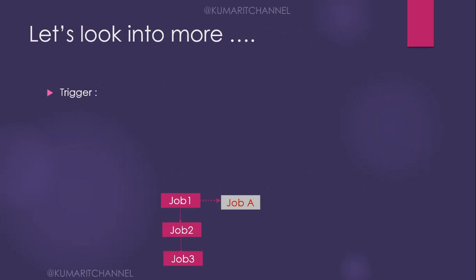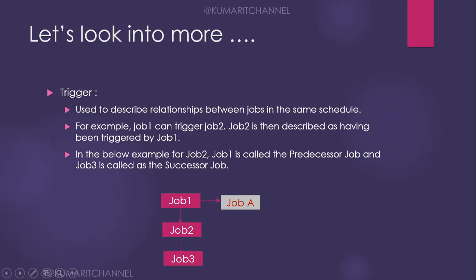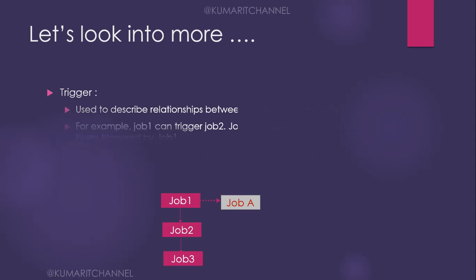Trigger is used to describe the relationship between jobs. For example, in an insurance project with a claims process, job 1 can trigger job 2, and job 2 is described as having been triggered by job 1. In the predecessor/successor example: job 2 comma job 1 is called the predecessor of a job, and job 3 is called the successor job.